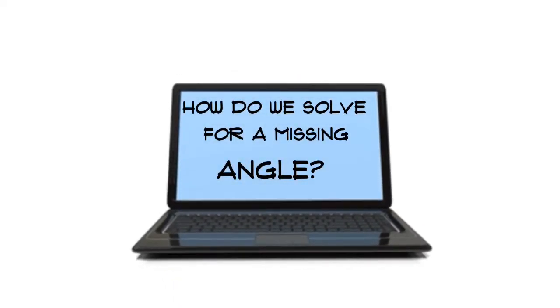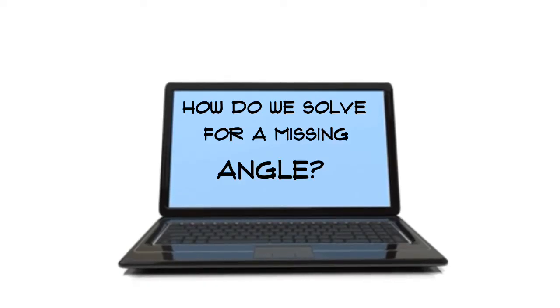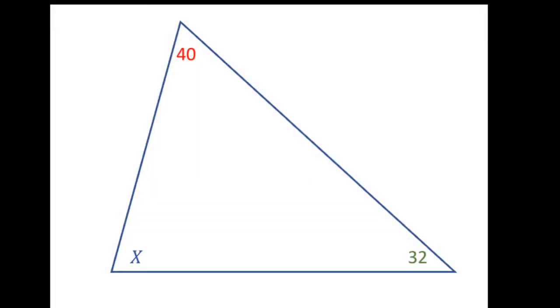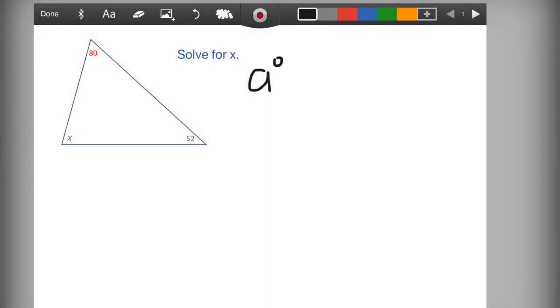So now what happens if I have a triangle with a missing angle? How can we solve? I am going to show you. Here is a triangle with measurements 80, 52, and X.